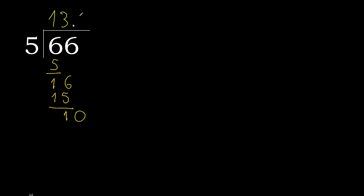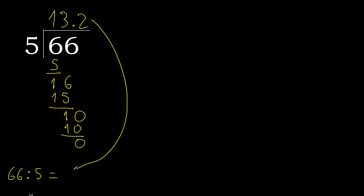10. 5 multiplied by 2 is 10. 10 minus 10 is 0. Therefore finish — 66 divided by 5 is finished.